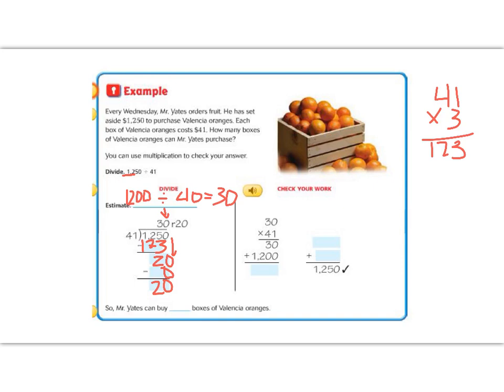So we're multiplying 30 times 41. We're going to use the standard algorithm. 0 times 1 is 0, 1 times 3 is 3. Now let's go down to the next line with our magic 0. 4 times 0 is 0, 4 times 3 is 12. Now we add these two together. 0 plus 0 is 0, 3 plus 0 is 3, 2 plus nothing is 2 and 1. Okay, but that didn't get us back to our original answer because we need to add the remainder. So 1,230 plus our remainder of 20 gets us to our answer of 1,250.